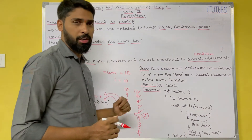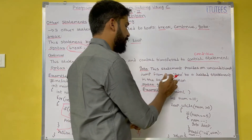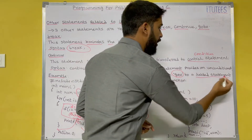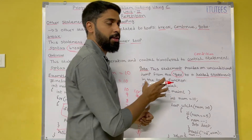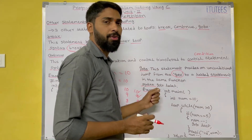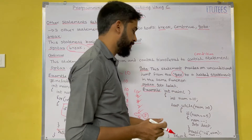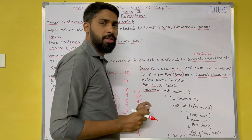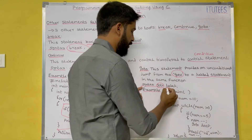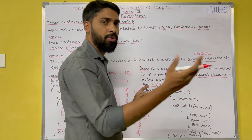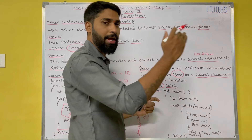The next statement is goto. This statement provides an unconditional jump from the goto statement to a label statement within the same function. Normally in any programming language, we avoid goto because if you use this goto statement, it is difficult to trace the flow of control of your program. The syntax is: the keyword goto followed by a label name, for example, goto ABC. You then write the label ABC in your program and control jumps to that label.